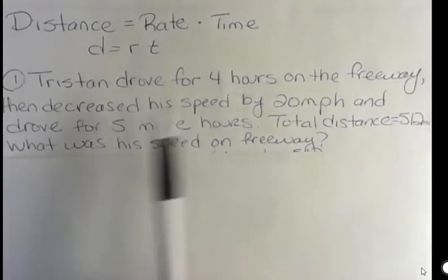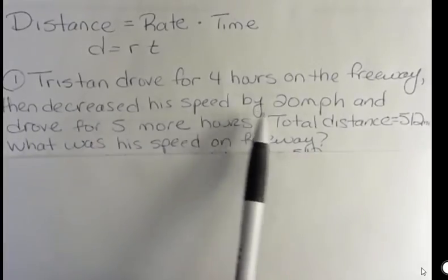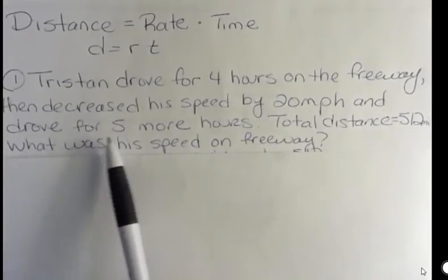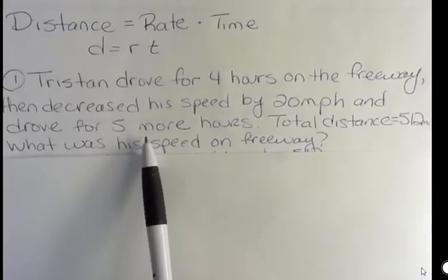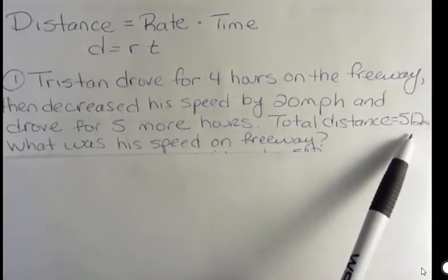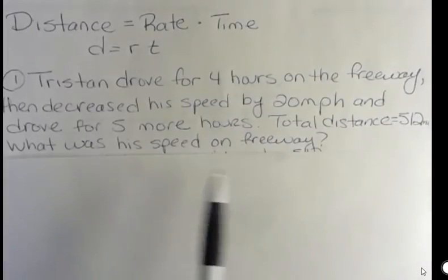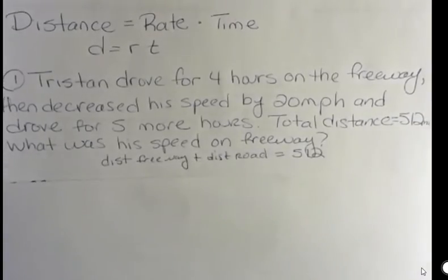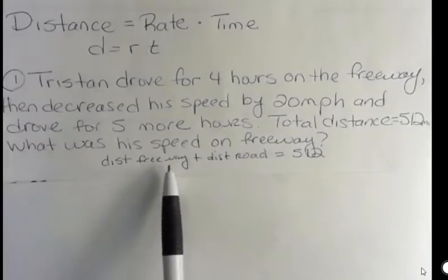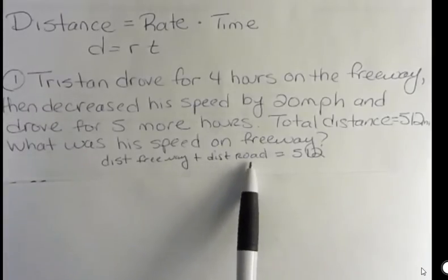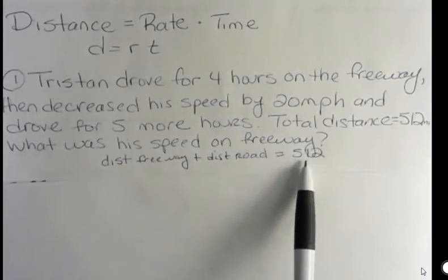Tristan drove for four hours on the freeway. He then decreased his speed by 30 miles per hour and drove for five more hours. What I left off here was like on a country road or something, and then his total distance was 512 miles. What was his speed on the freeway? So I hope you can agree with me that his distance on the freeway plus his distance on the dirt road or road was a total of 512 miles.